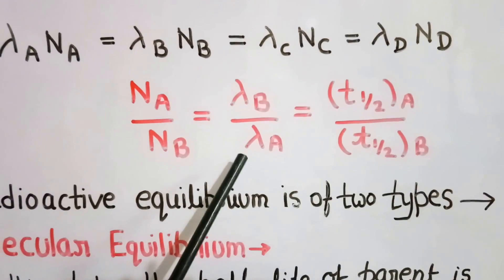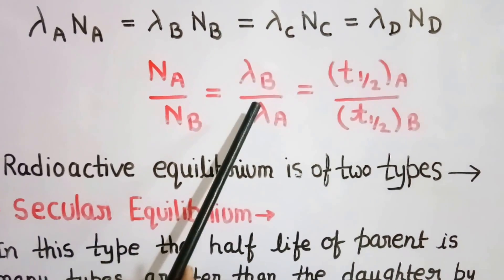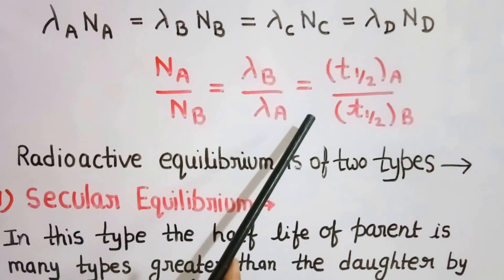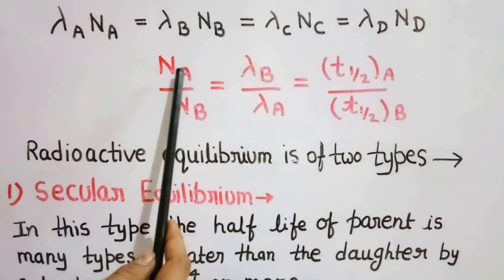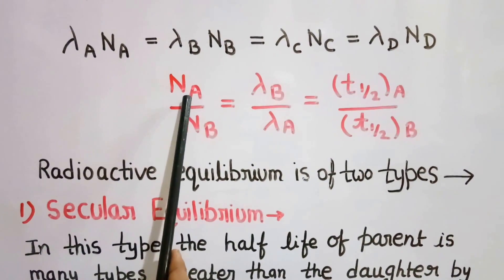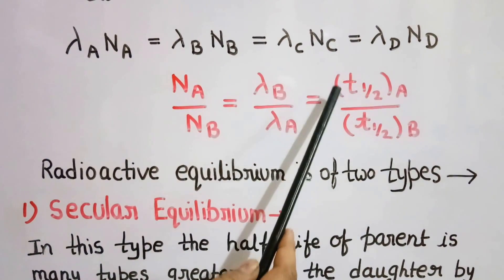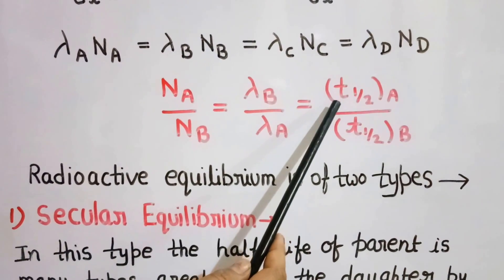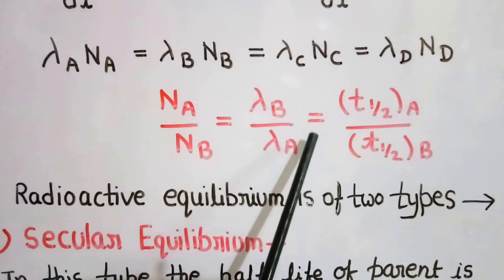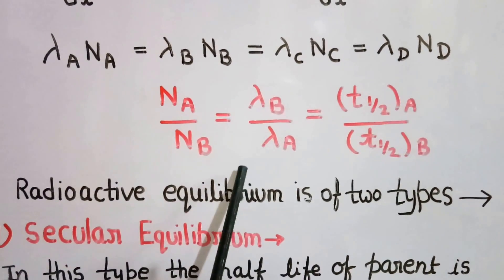We also know that the disintegration constant is inversely proportional to the half-life. So the number of atoms of each element will be directly proportional to its half-life. Greater the half-life, greater will be the number of atoms of that element.